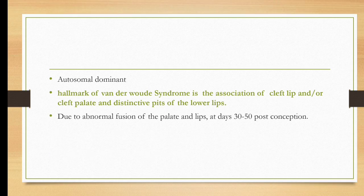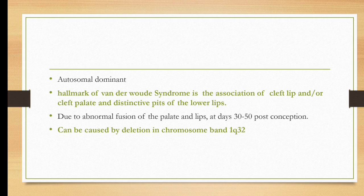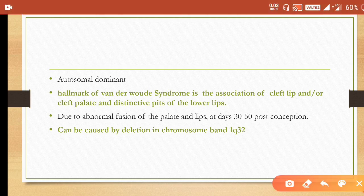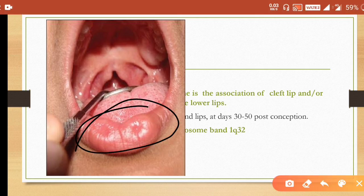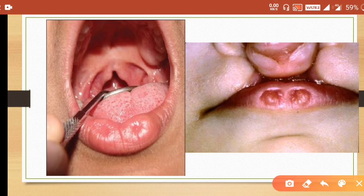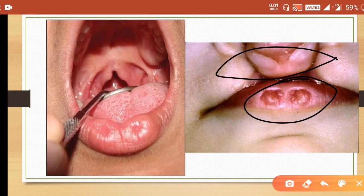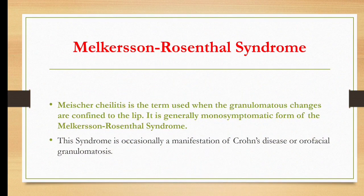Van der Woude syndrome occurs due to abnormal fusion of the palate and lips, mainly during 30 to 50 days post-conception. It can be caused by deletion of chromosome band 1q32, where 'q' is the arm of the chromosome — important for MCQs. It affects both genders equally. In images, you can clearly mark the lip pits and the cleft involving the soft palate, and classically see both cleft lip and palate along with the lip pits.